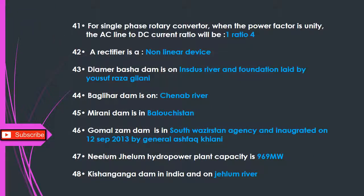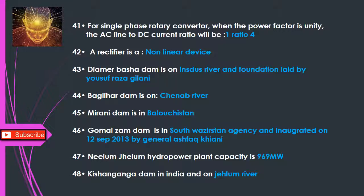Q41: For a single-phase rotary converter, when the power factor is unity, the AC line to DC current ratio will be — 1:√2. Q42: A rectifier is a — non-linear device. Q43: Diamar Basha Dam is on the Indus River and its foundation was laid by Yusuf Raza Gilani. Q44: Baglihar Dam is on — Chenab River.